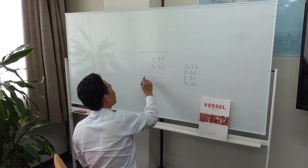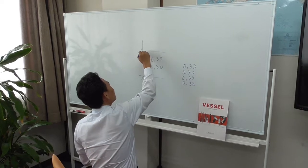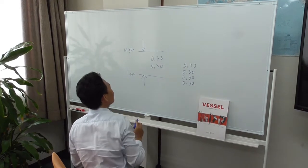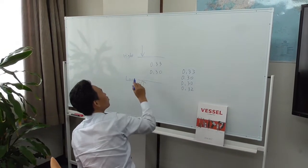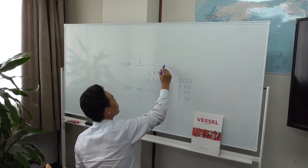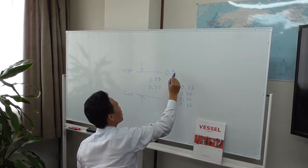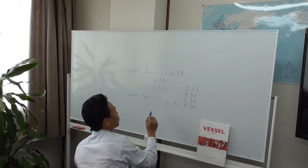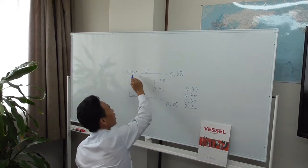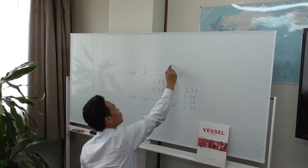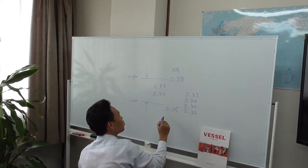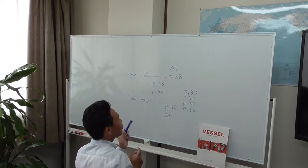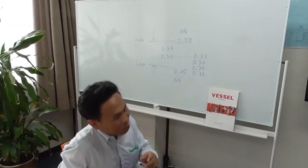So you can set the high time and low time. When the fastening time is over the limit, we set it to 0.38 high and 0.25 low, for example. If higher than this time, we can make it NG by this function. Less than 0.25 is also NG. This is high time and low time — let's set them like this.